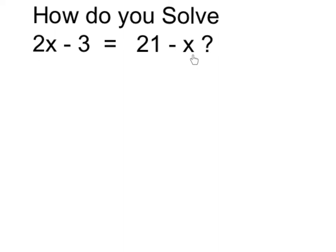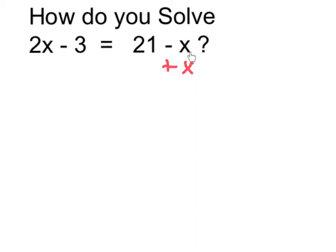Solving this equation means I want to find the value of x, which makes it true. Because I have the x in two places, I want to simplify this. I can remove the x here by adding x, and negative x plus x is going to cancel that out. This is algebra, and I need to remember to balance by doing the same to both sides.